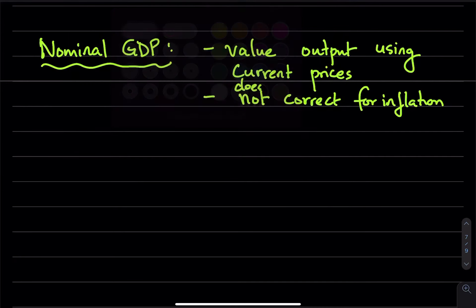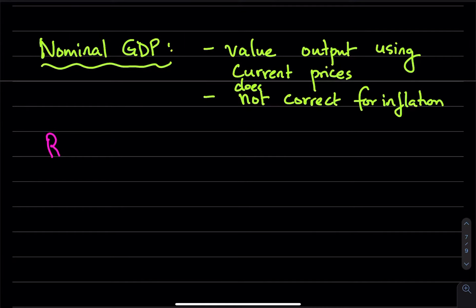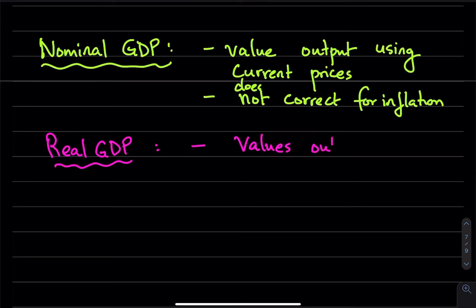Real GDP, on the other hand — this is used more frequently — values output using the prices of what we call a base year.